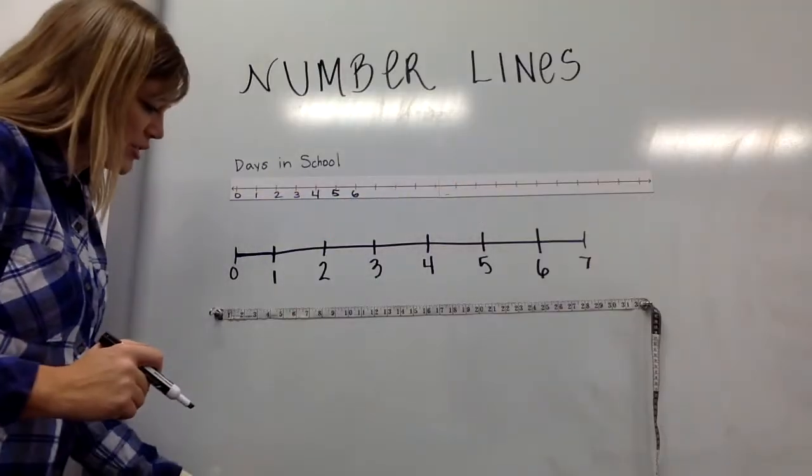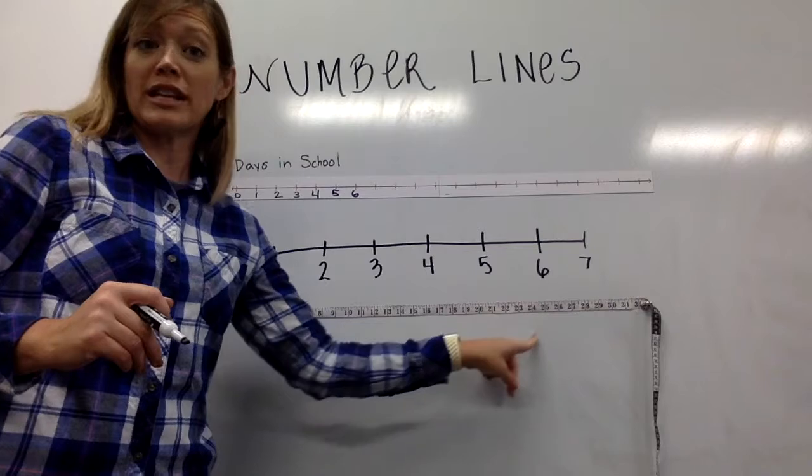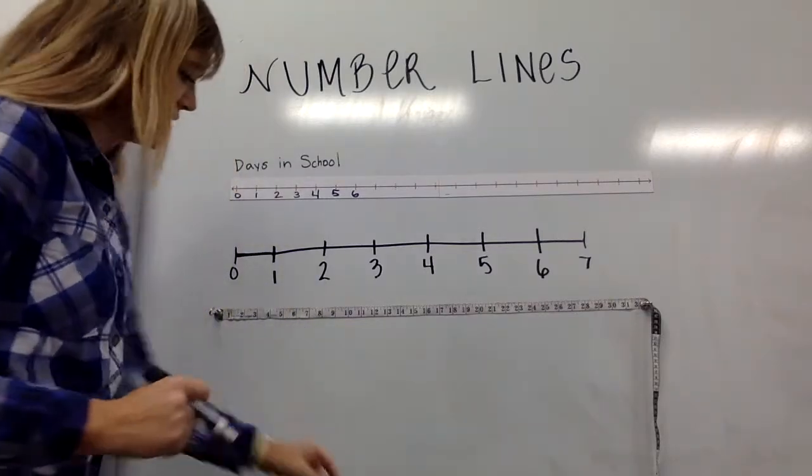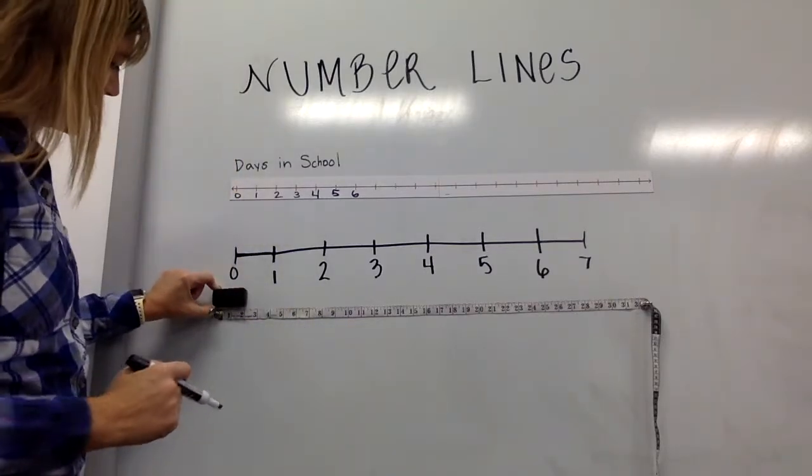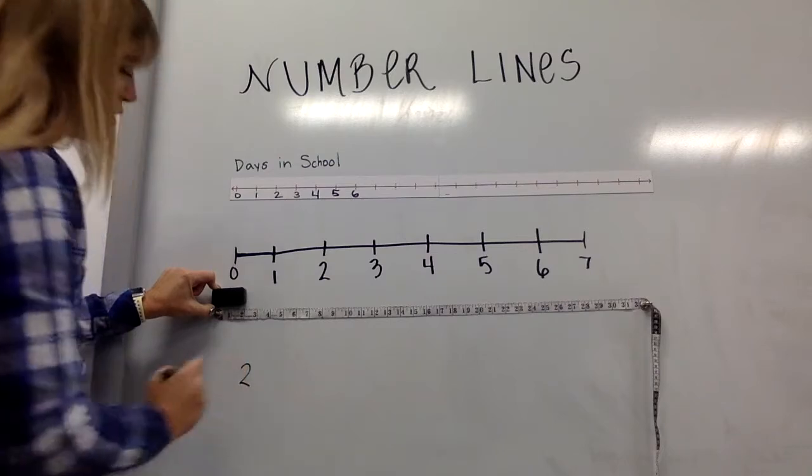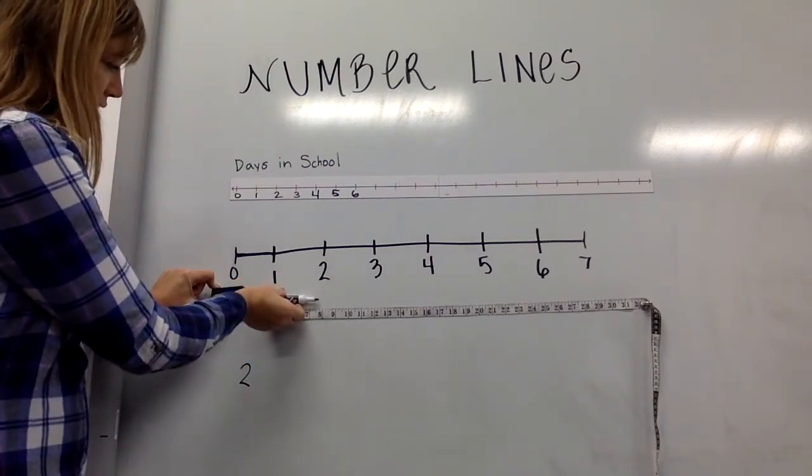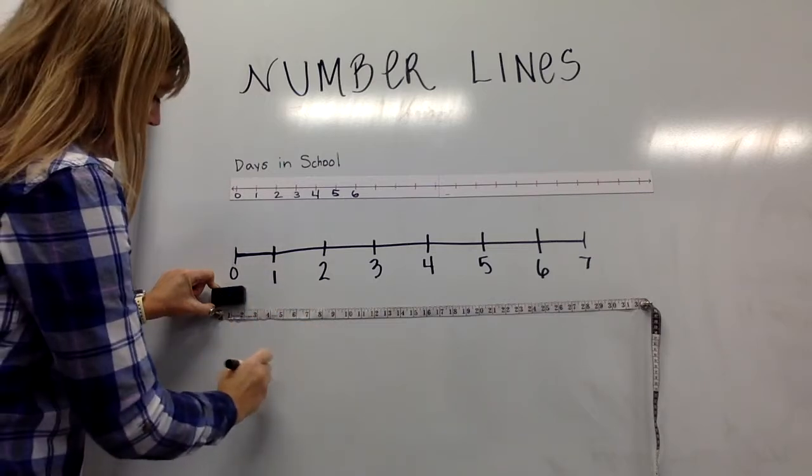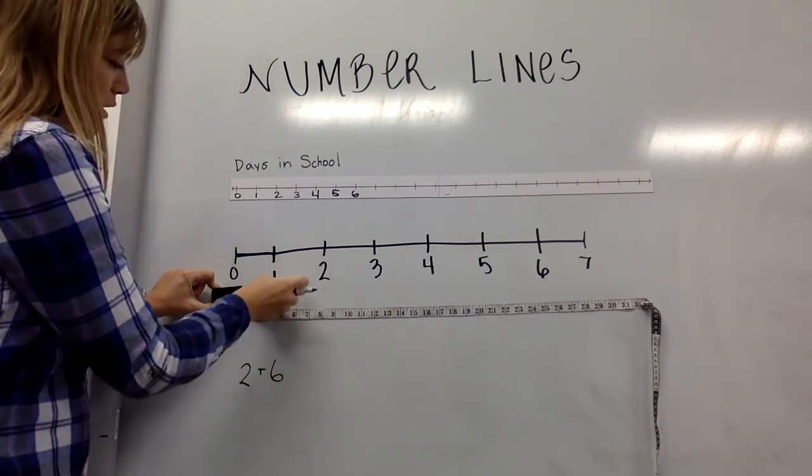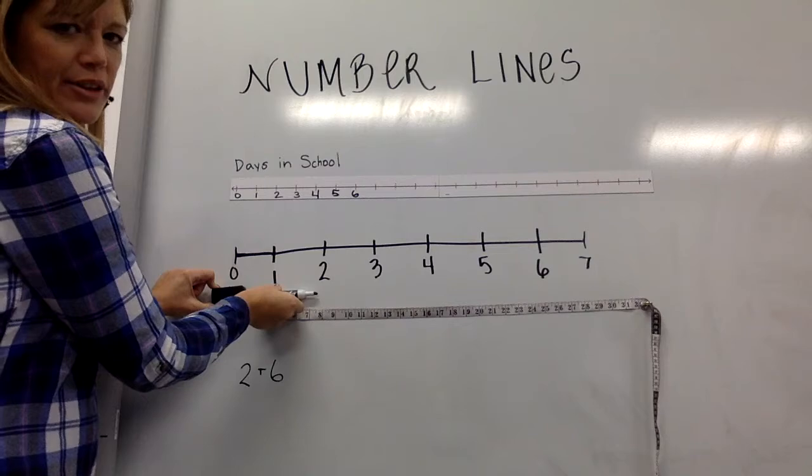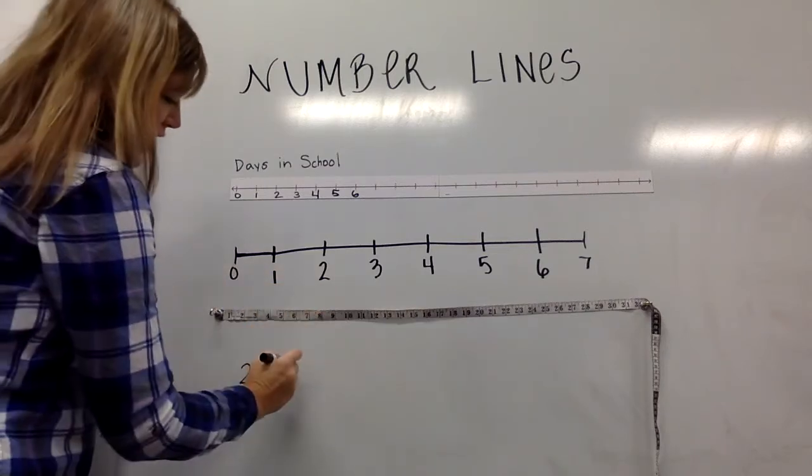Eventually we start to learn about number lines as related to measurement. So in this case, my eraser is two inches long. If I add my marker which is six inches long, how long are these two objects together? I can see that they reach eight.